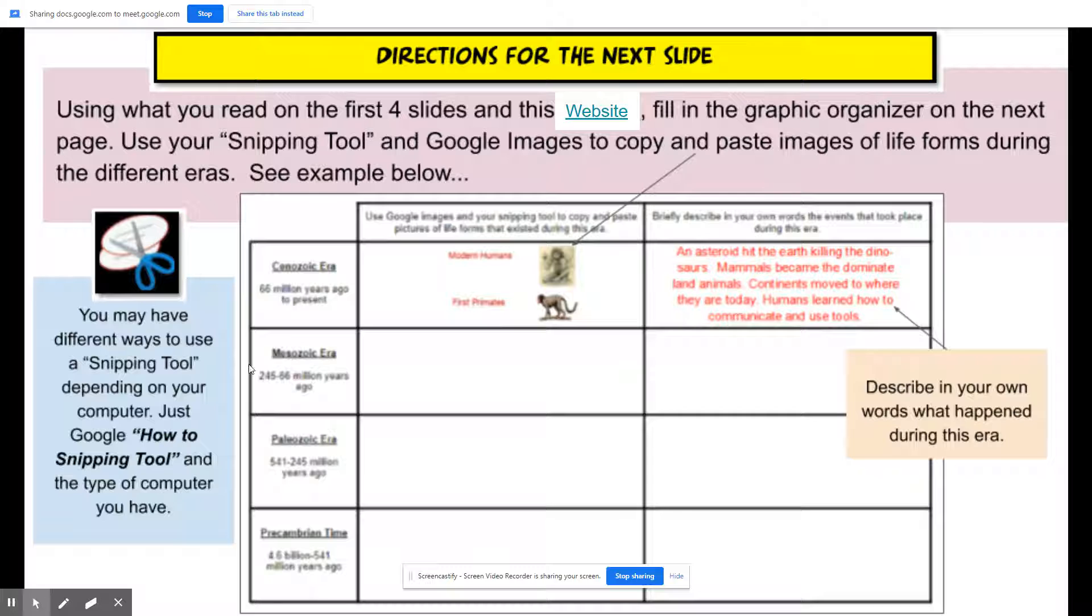So it says use Google images and your snipping tool to copy and paste pictures of life forms that existed during this time. So during the Cenozoic era, modern humans came about and the first primates emerged. So you copy, paste, label for the life forms. In this column here, you describe what happened and what animals existed.